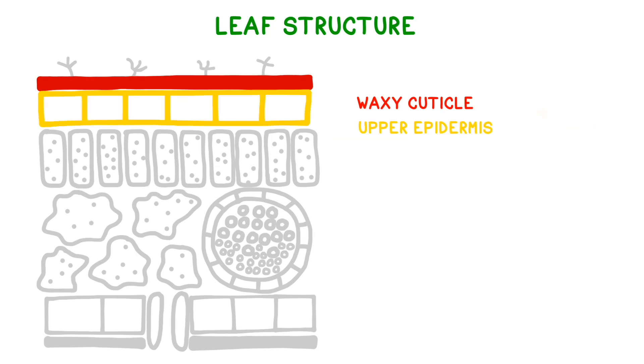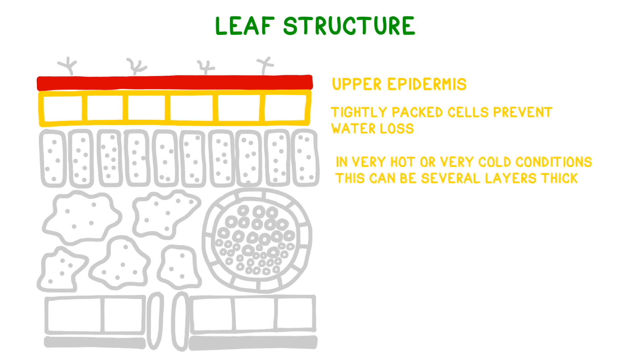The first true layer of cells is called the upper epidermis. These cells are tightly packed in order to help prevent water loss. In very hot or very cold climates, sometimes this layer can be several layers of cells thick. Because the upper epidermis is translucent, it allows light to pass through for photosynthesis.